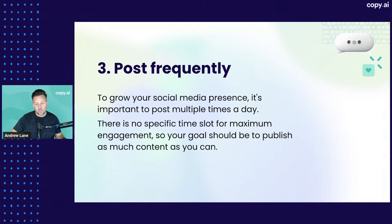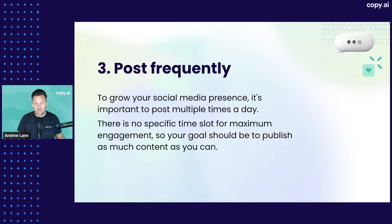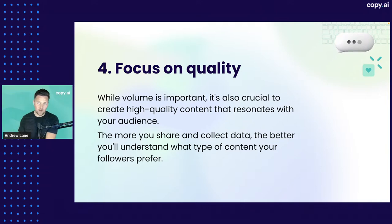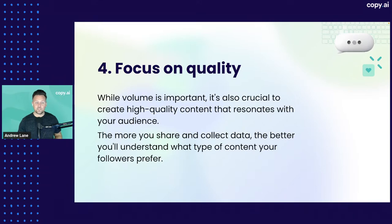Post frequently — to grow your social media presence, post multiple times a day if possible, especially on platforms like Twitter. Your goal should be to publish as much as you can to get out there and test. If you're struggling to write that much content, Copy AI can help. Focus on quality as well — while volume is important, it's crucial to create high-quality content that resonates with your audience. Try things, put them out there, see what feedback you get, and improve.